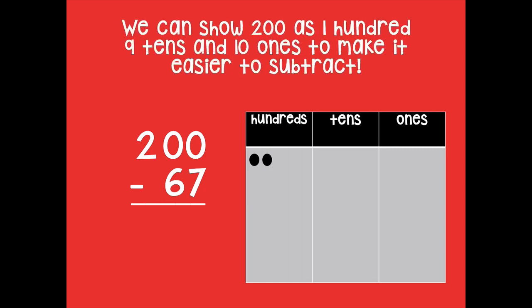So again, remember we can show 200 as 100, 9 tens, and 10 ones to make it easier to subtract. So I'm gonna cross that out and I'm gonna show my 10 tens. Oh wait, one of those tens turns into 10 ones, so now I have 100, 9 tens, and 10 ones. Let's model that in the vertical form.